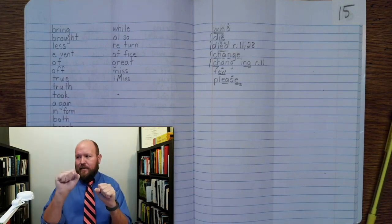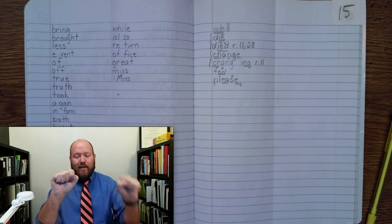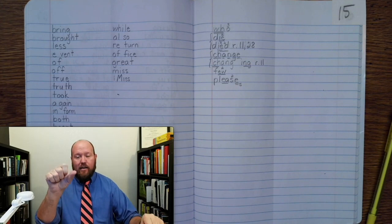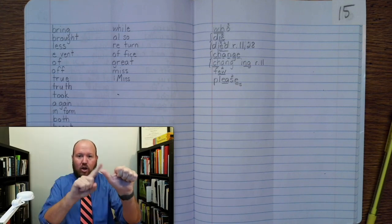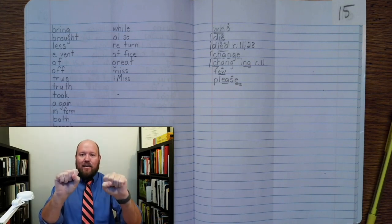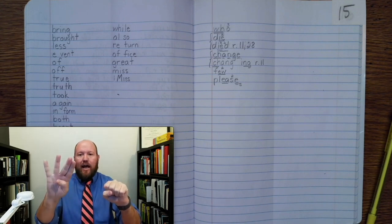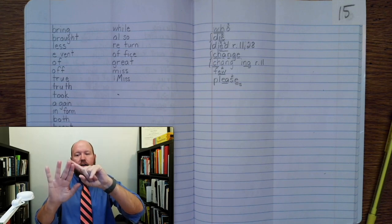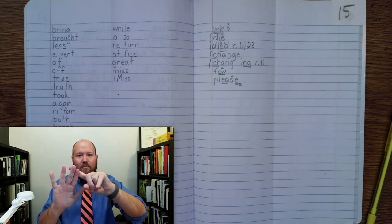Here we go. PLEASANT. Base word please, ending ANT. I write please without the silent final E because my ending ANT starts with a vowel. Pleasant. You'll notice here that my EA sound has changed from an E to an E. Pleasant.